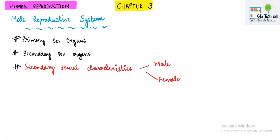Hello everyone. In this video we will be starting with chapter number three: Human Reproduction. We have studied the events of sexual reproduction in chapter one. Chapter two specifically dealt with all sexual events happening in flowering plants. Now in chapter three we will study the sexual events happening in the human body, so the terminology will be more extensive here.